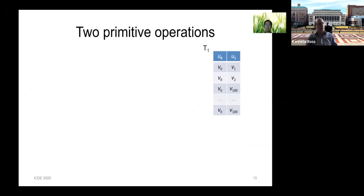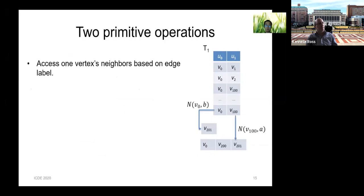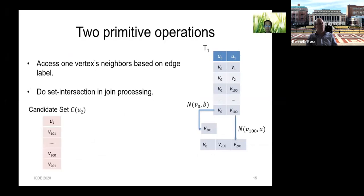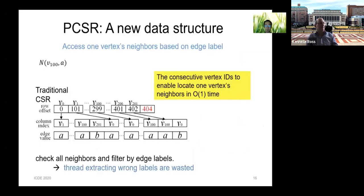After filtering, we need to perform a vertex joining algorithm. There are two primitive operations used frequently in joining: the first is accessing vertex neighbors with a given edge label, and the second is set intersection. We design a global data structure to accelerate the first primitive on GPU. Traditional CSR is widely used, with an offset layer, neighbor index layer, and edge value layer, but it does not work well for the first primitive — it must extract all neighbors and check each edge label.